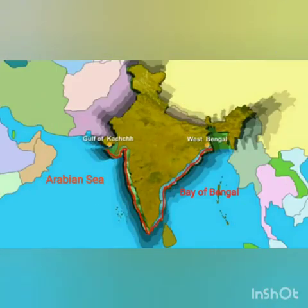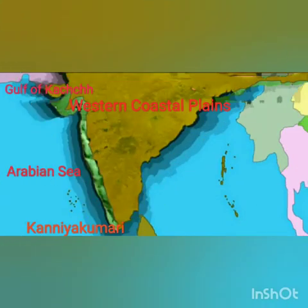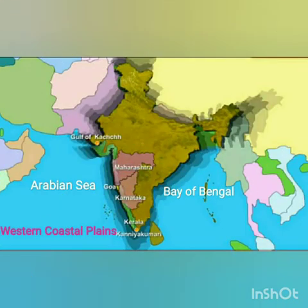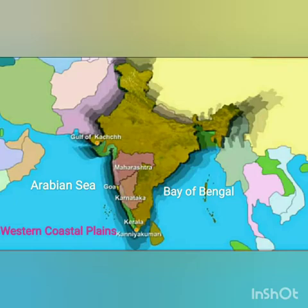India has a vast coastline. It has a western coast and an eastern coast. The western coastline begins from the Gulf of Kutch and moves southwards along the coasts of Maharashtra, Goa, Karnataka and Kerala. Finally, it ends at Kanyakumari. This coastline is along the Arabian Sea.